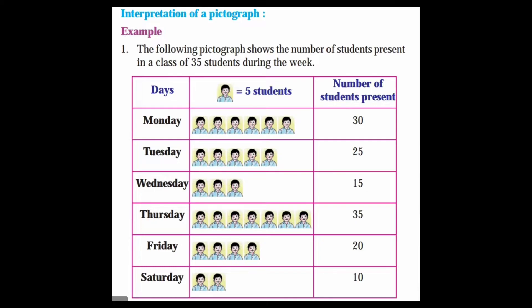Let's read the attendance data. Monday: 6 pictures, so 6 times 5 equals 30 students present. Tuesday 25, Wednesday 15, Thursday 35, Friday 20, Saturday 10.